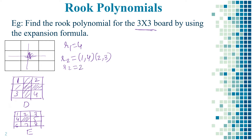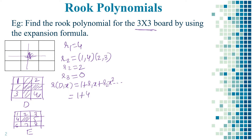By observation, only these two possibilities exist for placing two rooks on board D, so R2 = 2. For three rooks: placing the first on 1 and second on 4 leaves no room for a third, so R3 = 0. Therefore the rook polynomial for board D is R(D,x) = 1 + 4x + 2x².